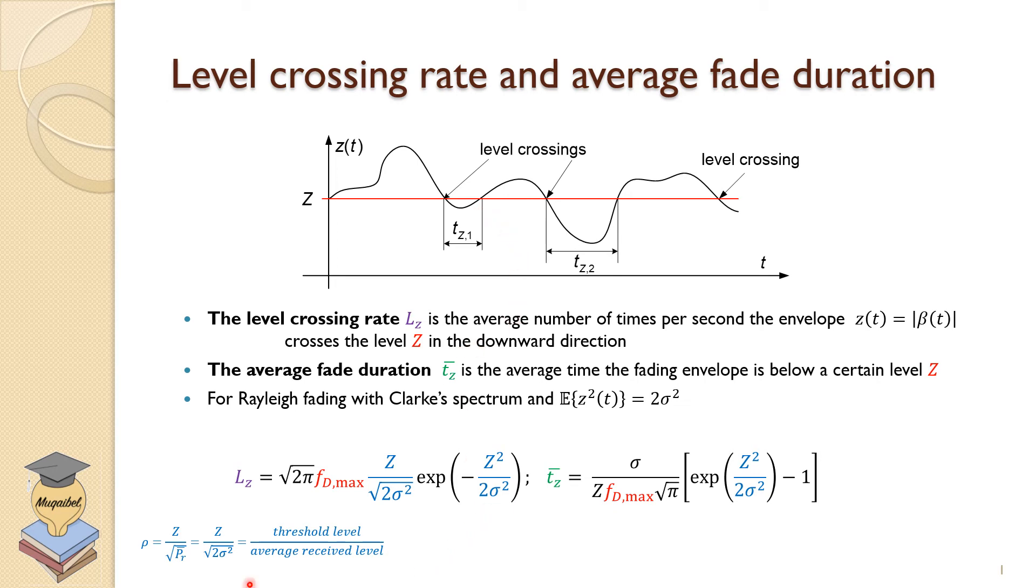Just like to know that some textbooks use rho to stand for Z over square root of B bar average. And if you want to use that notation, then you can replace here with rho and rho squared. So it's just a different notation.